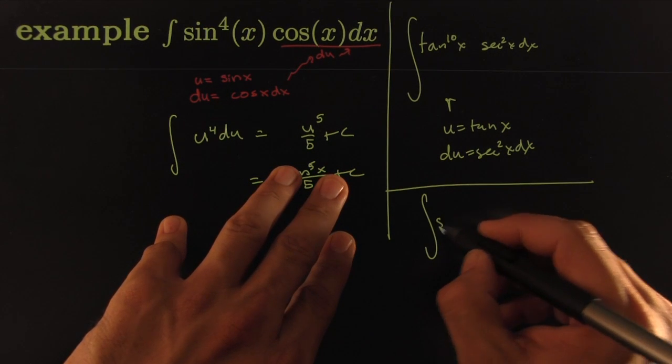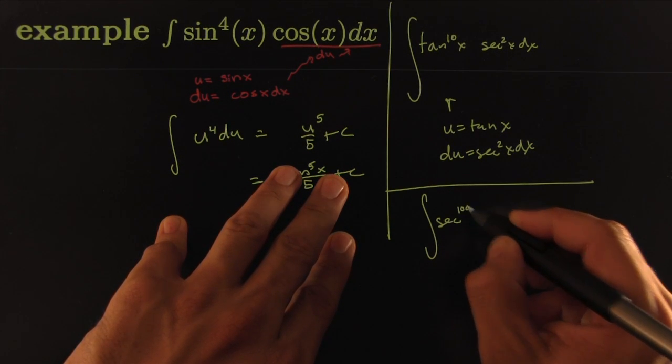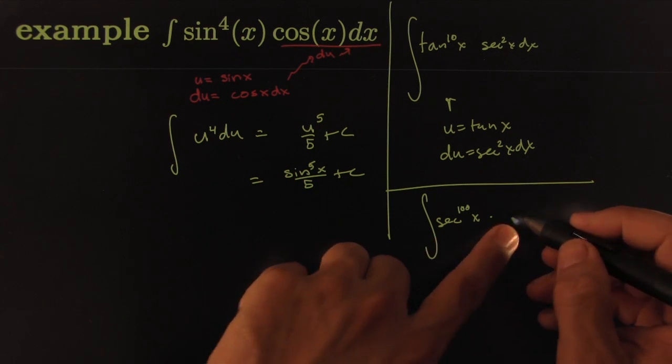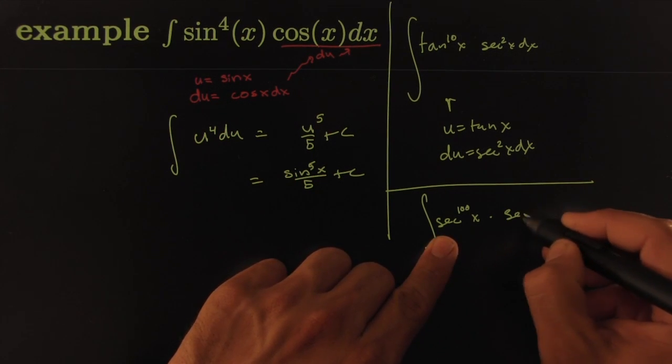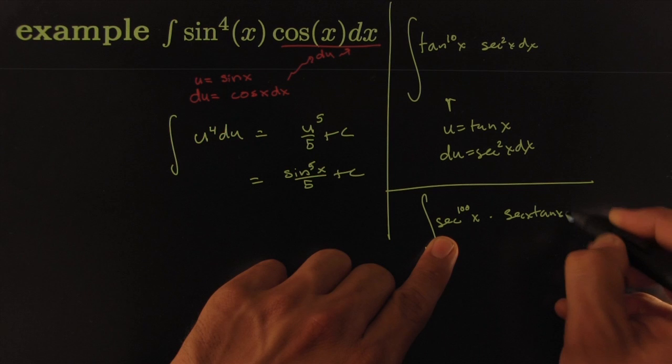I'll show you again. What if you had secant to the 100th x. And over here, think what's the derivative of secant? What would be nice to have over here? A secant x tangent of x dx.